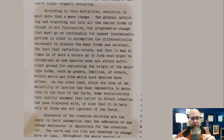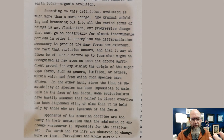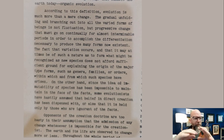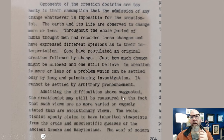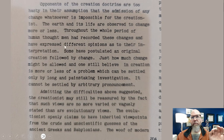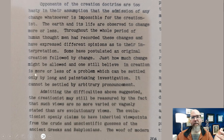Modern young earth creationists will say you can have change — you can create groups of species that have similar characteristics, hierarchically classified into different genera, and put those genera together into a family, and some even put several families together into maybe an order, and still say that's one kind of organism. Continuing from the text: 'The earth and its life are observed to change more or less throughout the whole period of human thought. Men have recorded these changes and have expressed different opinions as to their interpretation. Some have postulated an original creation followed by change. Just how much change might be allowed and one still believe in creation is more or less a problem which can be settled only by long and painstaking investigation. It cannot be settled by arbitrary pronouncement.'